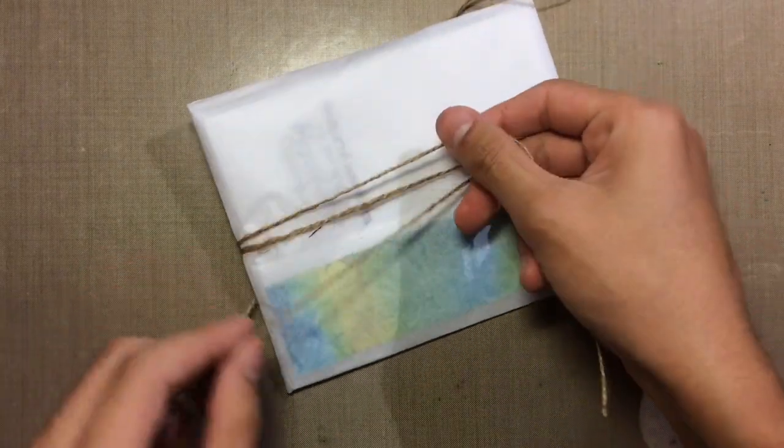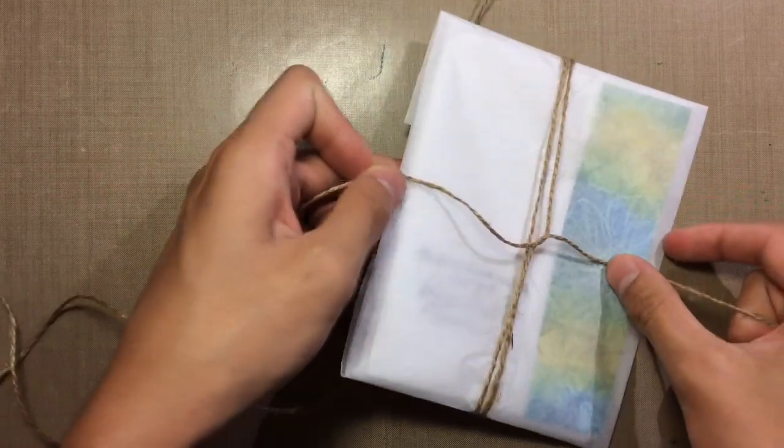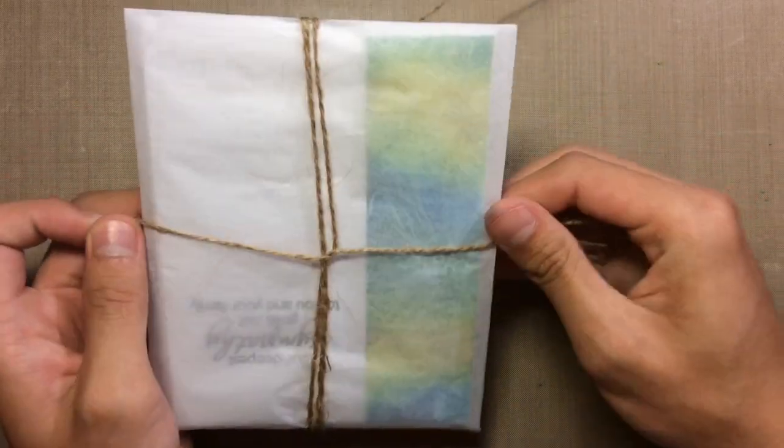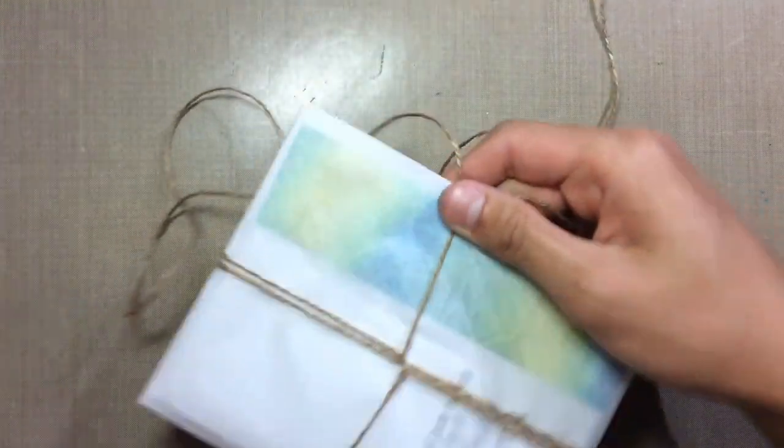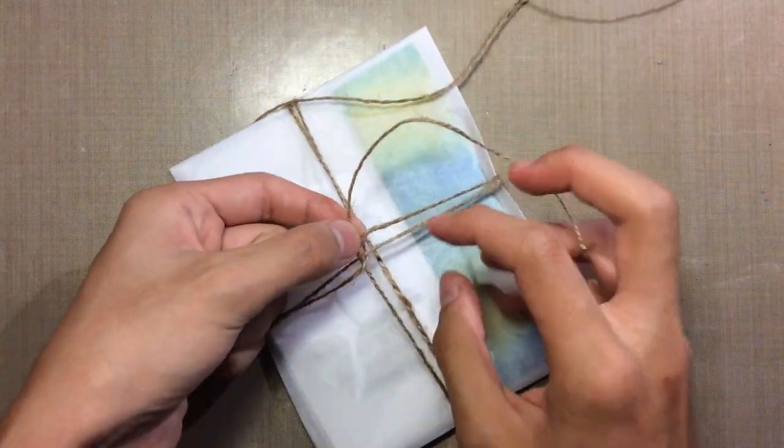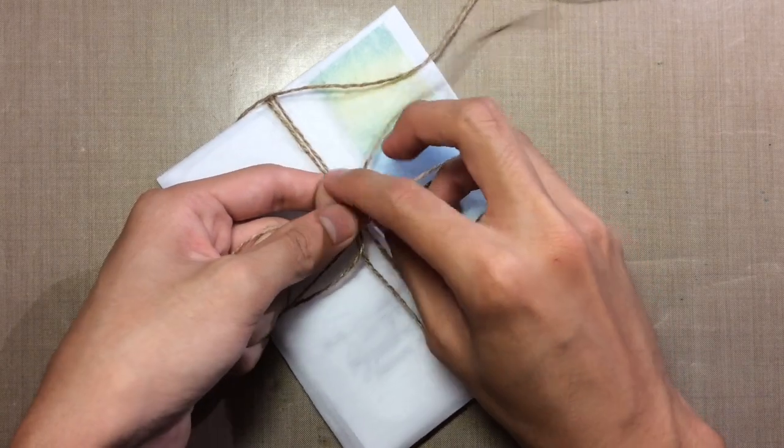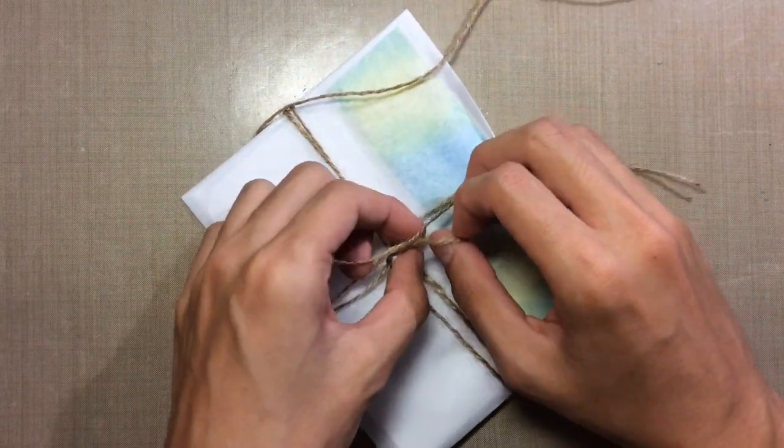Then I like to take this one and this one and cross it, like that. Then you want to use the long one again, because one's going to be your tail and one's going to be your long end. Wrap it again twice, then come over here.